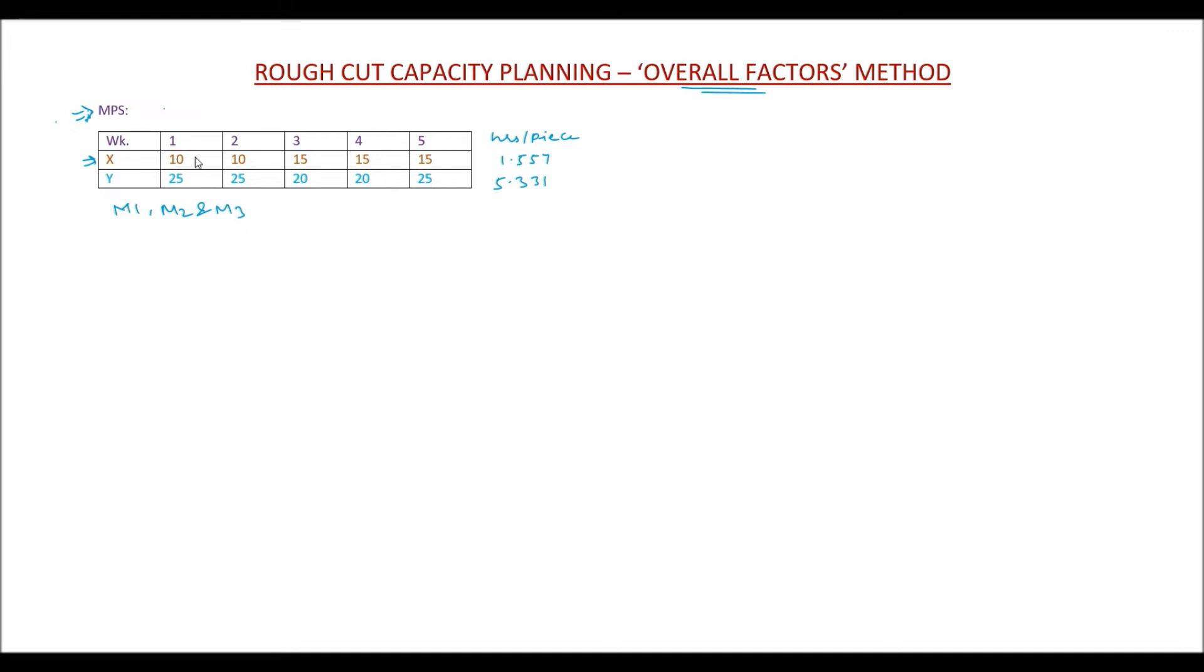Each unit of X requires 1.557 hours to be produced totally, considering the time required for M1, M2, and M3. We have been given that in week 1 we have to produce 10 units. So now let's find out the total hours for each product that is required.